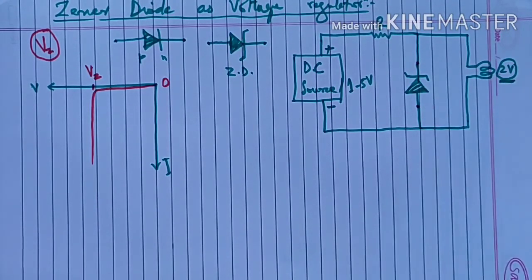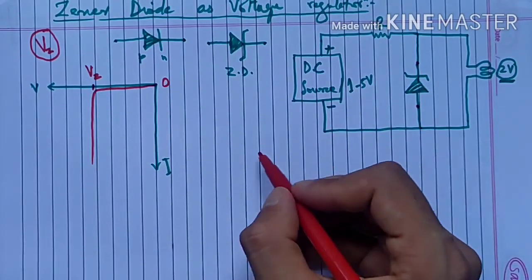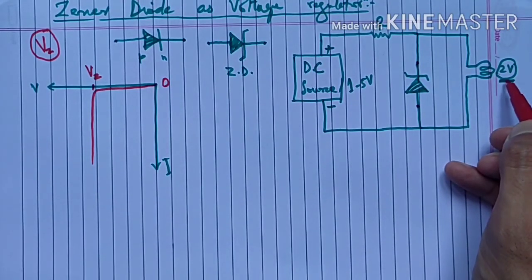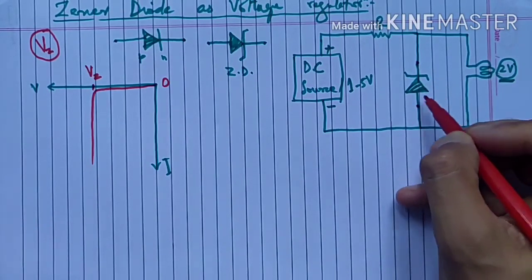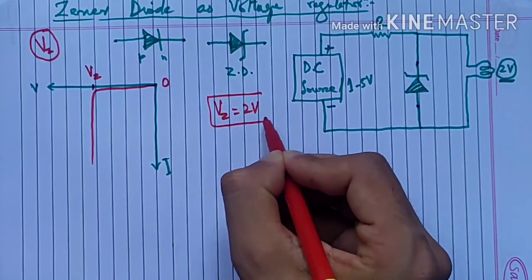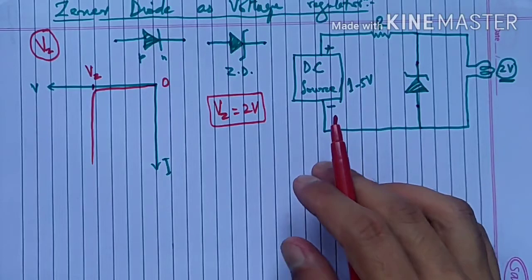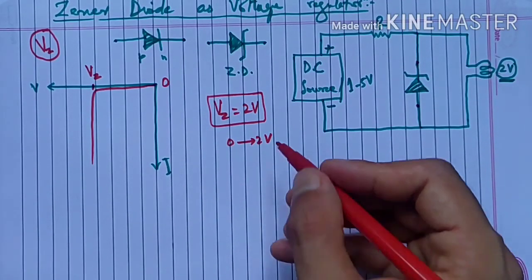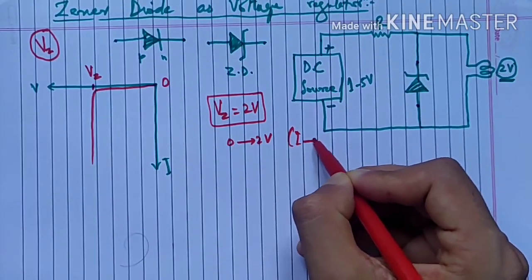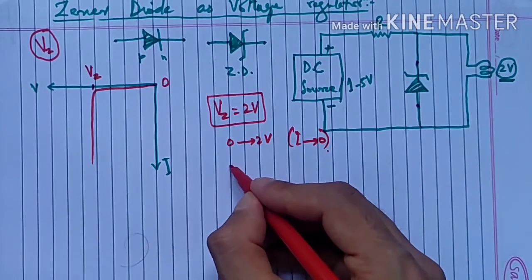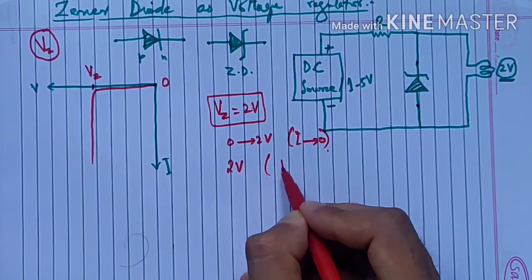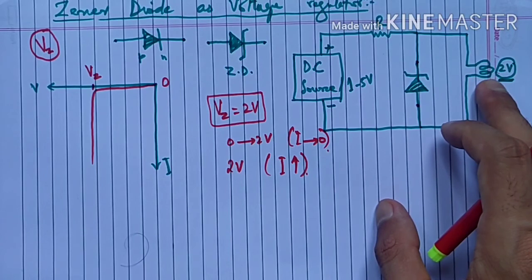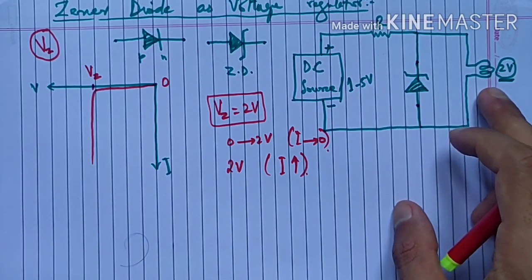अब यहाँ पर कैसे ये काम करेगा वो हमने देखना है। Suppose जो DC source है, उसका output जो fluctuate कर रहा है 1 to 5 volt, और output पर जो हमारे पास load है हमें चाहिए उसके across two volt का voltage। Let's assume कि यह जो zener diode है, इसका zener voltage two volt है। याने कि two volt तक अगर voltage है - zero से लेके two volt तक - यानि two volt से less, one point nine something या one point eight, तो तब तक zener breakdown नहीं होगा। हम चाहते हैं कि इस load के across two volt से ज़्यादा potential difference न लगे, तो दो cases हैं यहाँ पे।